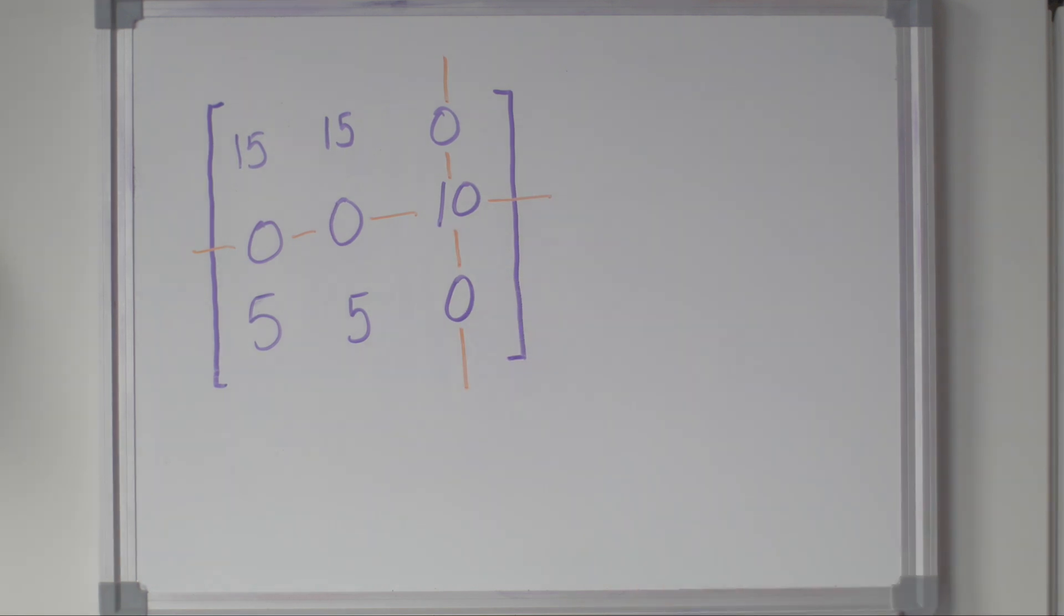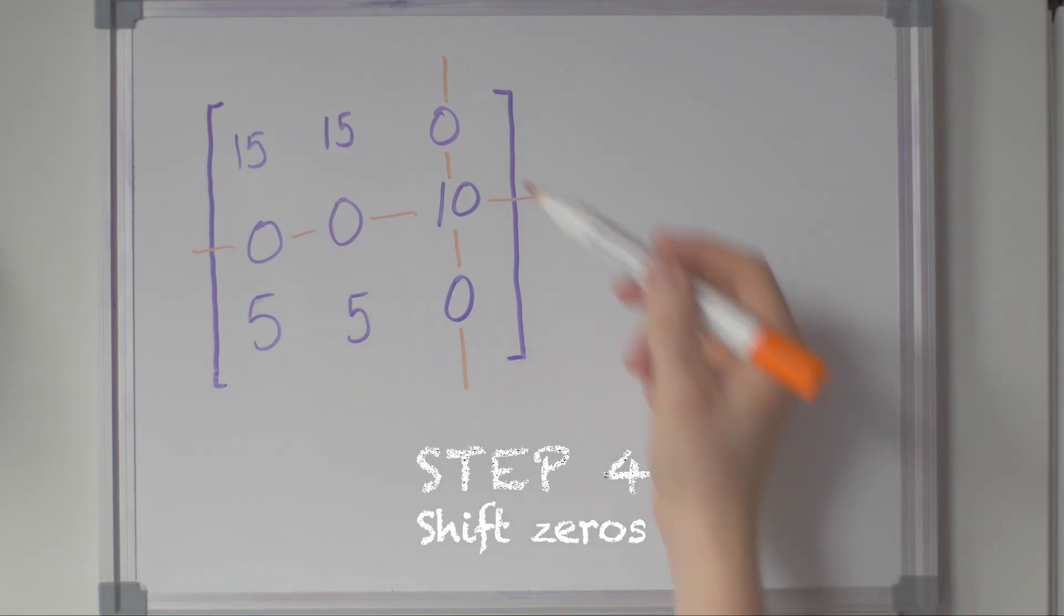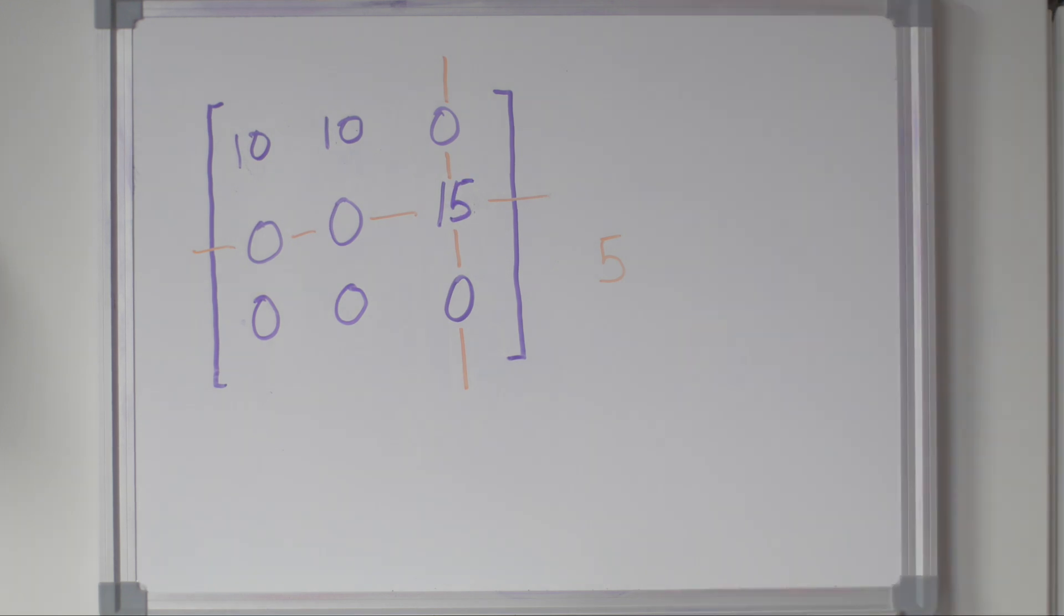Step four: shift zeros. We need to shift at least one zero to an uncovered position in order to increase the minimum number of lines required to cover all of the zeros. To do this, we first find the smallest uncovered value. In this case, five. This value is then subtracted from all the uncovered values and added to each value situated at the intersection of two lines. The lines are then removed and we jump back to step three.